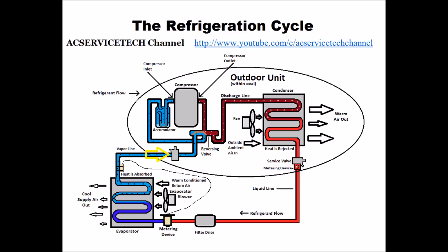It then continues through to the service valve, and at the service valve is where we typically measure total superheat. Right in the middle of the evaporator coil where the saturated state is, right after it comes out as a complete vapor, the temperature increase from there all the way to the service valve is called the total superheat — we typically measure that actual temperature within a few inches of the service valve. It then continues as low pressure, low temperature vapor refrigerant through the reversing valve and into the accumulator, whose job is to make sure the compressor does not receive any liquid.